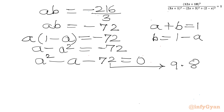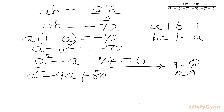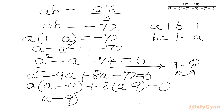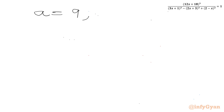From the first two terms we can take A common, and from the last two terms we will take 8 common. So we will attain A equal to 9 and A equal to 8. So writing here: A equal to 9 and A equal to 8. Now A was our substitution, so we substitute back.